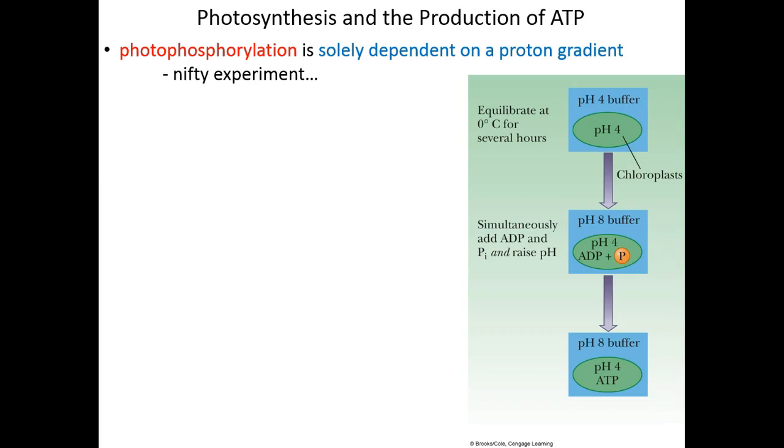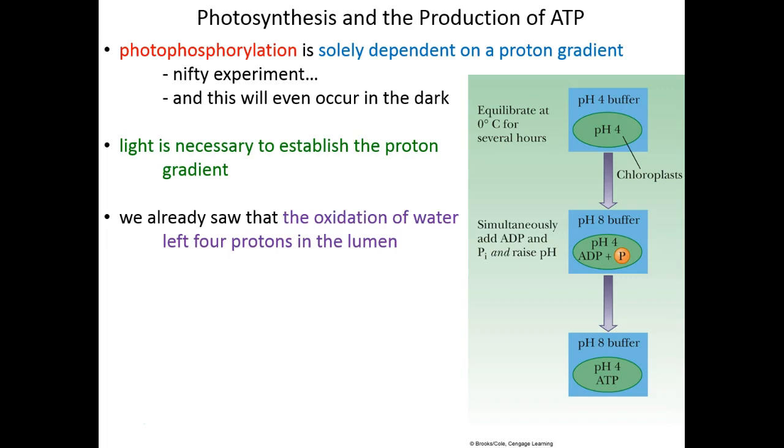Essentially, as protons followed their concentration gradient from inside the chloroplast and began migrating outside, ATP was produced. And this reaction will occur even in absolute darkness. So it doesn't require sunlight. Yes, sunlight is necessary to establish the proton gradient in the first place. It is energy from the sun that allows protons to be pumped to create a gradient. But once that gradient is established, those protons will flow all on their own and make ATP.